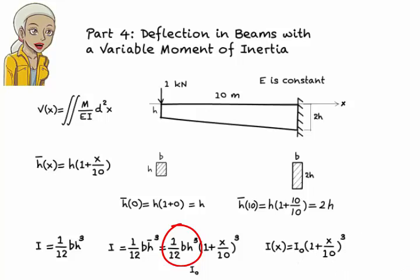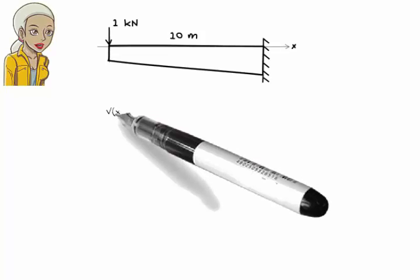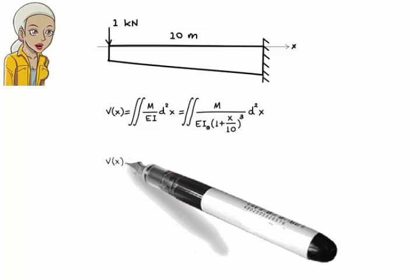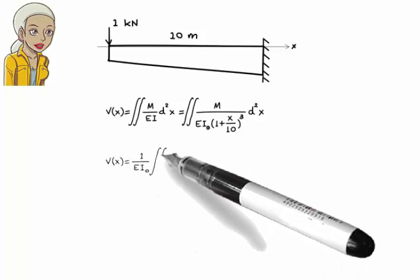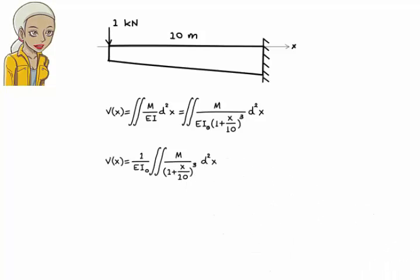So what is I₀? It is the moment of inertia of the section at the left end of the beam. The general displacement equation can now be written like this. Let's assume a constant E. Then v(x) equals 1 over EI₀ times the double integral of M over 1 plus x over 10 cubed.